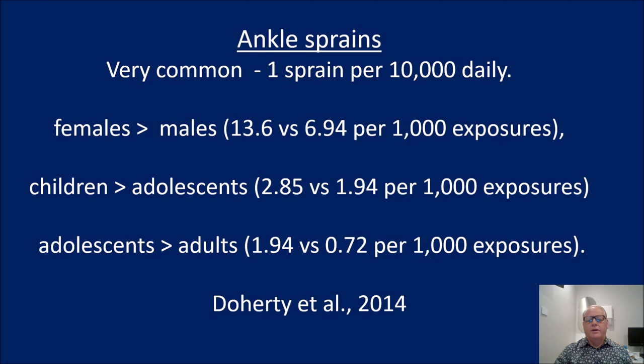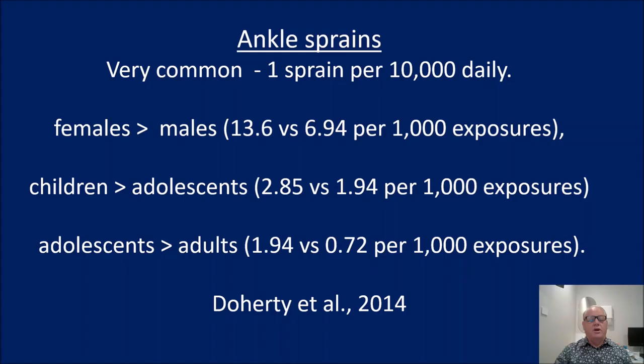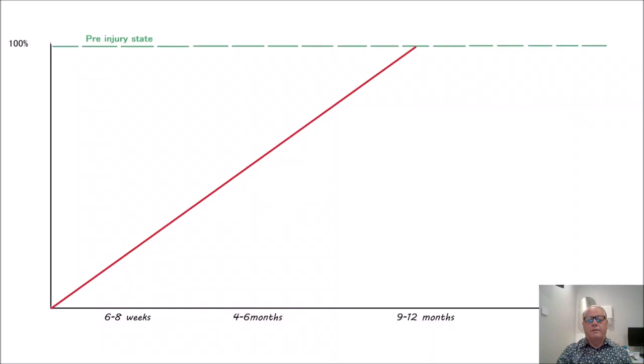Ankle sprains are very common — about one sprain per 100,000 population daily. Females more than males, and children more than adolescents, and adolescents more than adults.